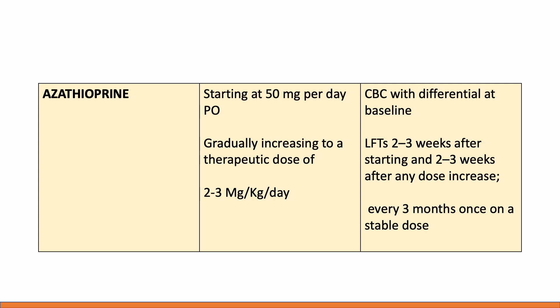Let's talk about azathioprine first. Azathioprine has been found to be as effective as most other immunosuppressants used for autoimmune ILDs, but the major problem it has faced in clinical trials is adverse effects. Azathioprine has to be started at a dose of 50 mg per day initially, then gradually increased to a final therapeutic dose of 2 to 3 mg per kg per day. For a patient who is 50 kg, the final dose will be 100 mg, so 50 mg twice a day.